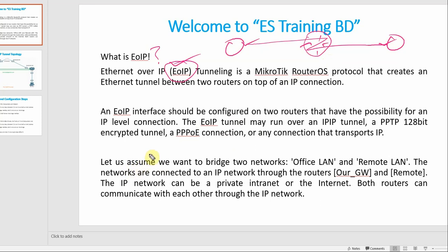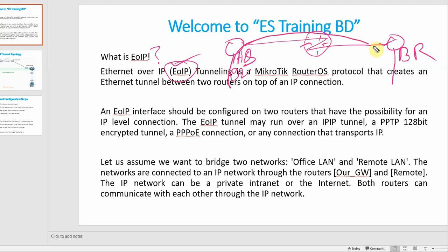So how does EoIP actually work? Let's assume we want to bridge two networks. For example, we have a headquarter router and a branch router. We have a LAN network at the HQ side and a LAN network at the branch side. We have a data interface bridge between them.